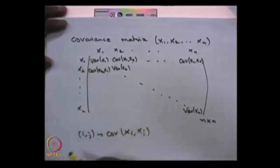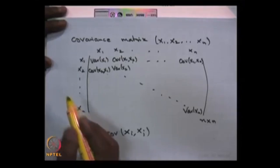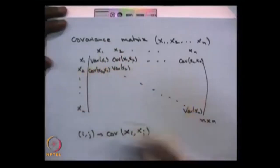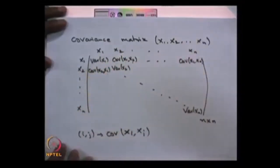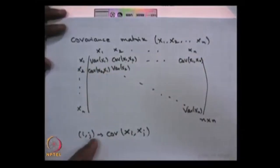Just as we gave the two-dimensional bivariate normal distribution, for an n-dimensional random vector where each component is normally distributed, we need the covariance matrix in order to write the joint probability density function of the full n-dimensional random variable.